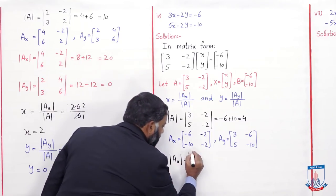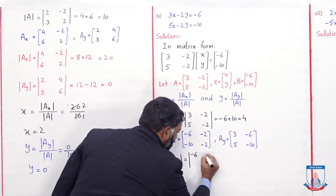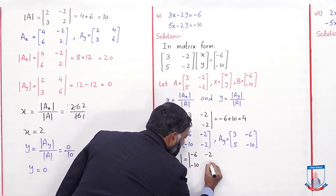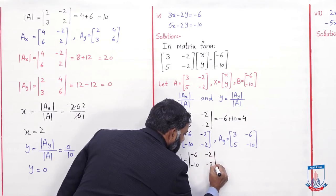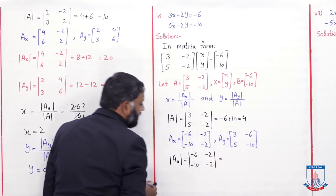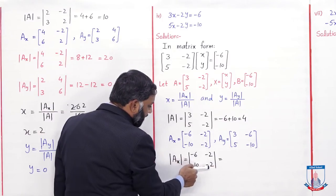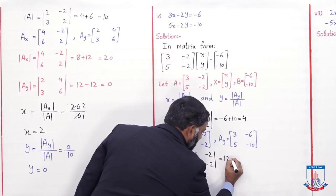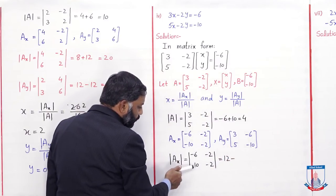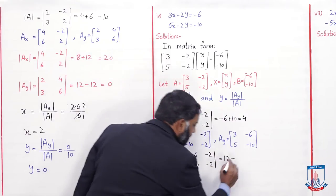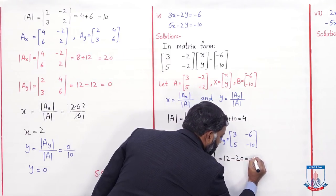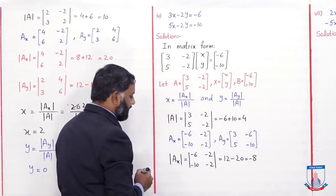Det(Ax) matrix [(-6), (-2); (-10), (-2)]: diagonal entries ko multiply karein — (minus 6) × (minus 2) = plus 12. Minus non-diagonal entries: (minus 2) × (minus 10) = plus 20. Toh 12 minus 20 = minus 8. Det(Ax) = minus 8. Ab det(Ay) find karenge.